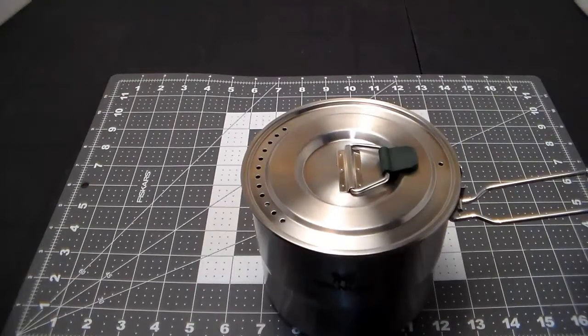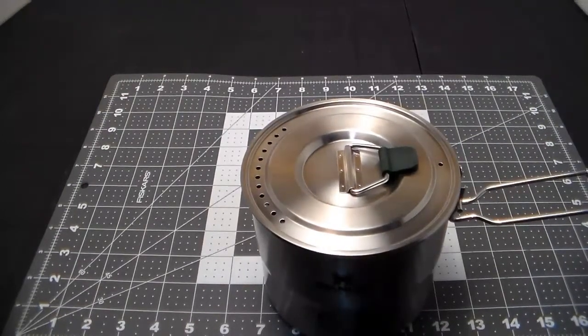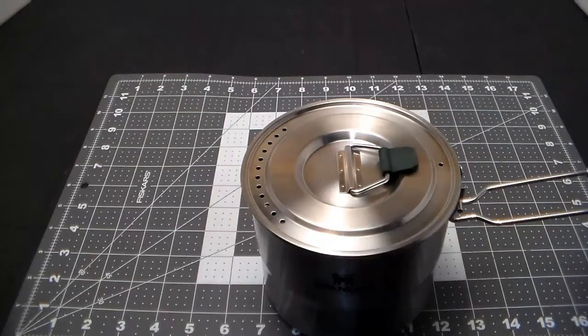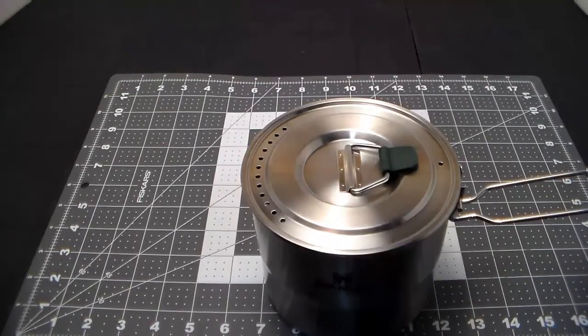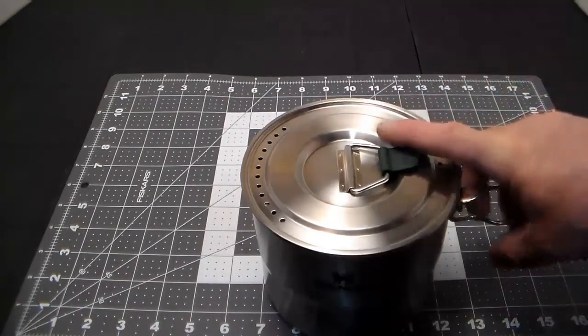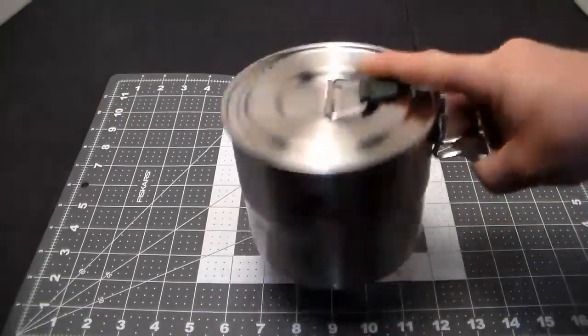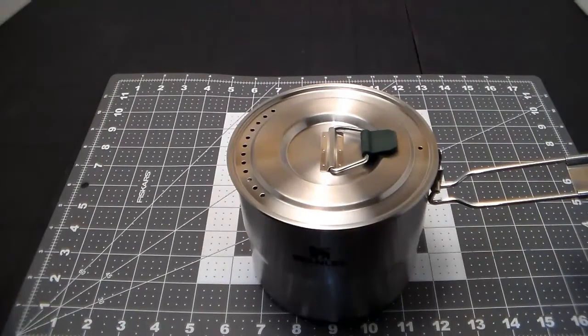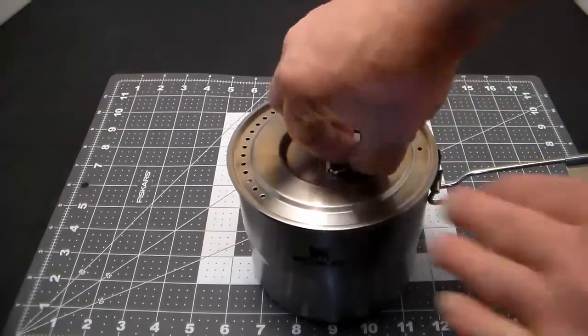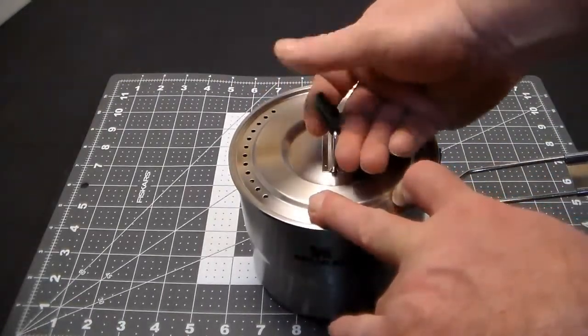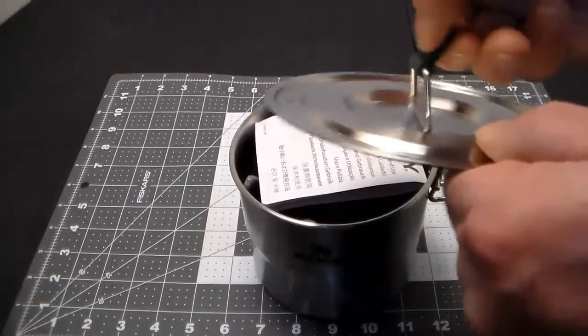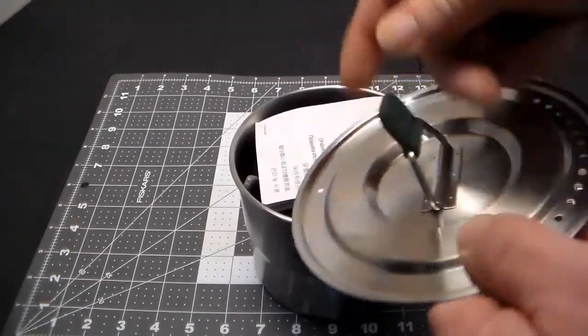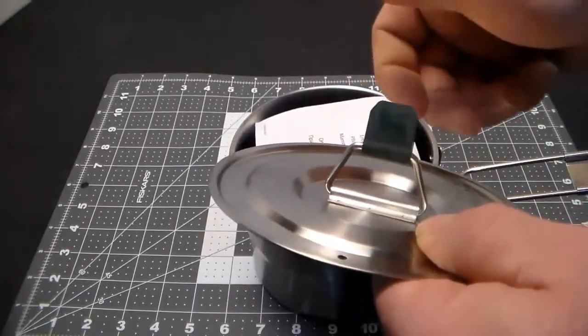Folding handle just like the Stanley Adventure Camp Cook Set, the 24 ounce one. It's very popular, I have several of them. Nice generous sized pot. The pot is 1.1 quart or 1 liter. I like that. That guy on the lid goes up and stays where you want it. And it's got a silicone tab. That's nice.